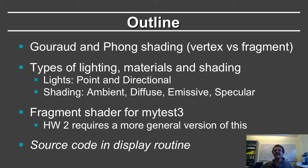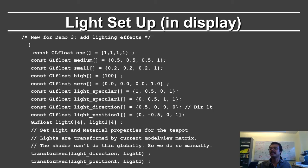To recap the outline: we've talked about Gouraud and Phong shading, the types of lighting — ambient, diffuse, emissive, specular — and we've talked about the fragment shader. The final thing we need to talk about is the source code in the main OpenGL program in the display routine.